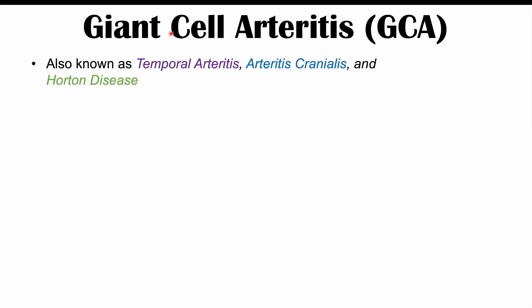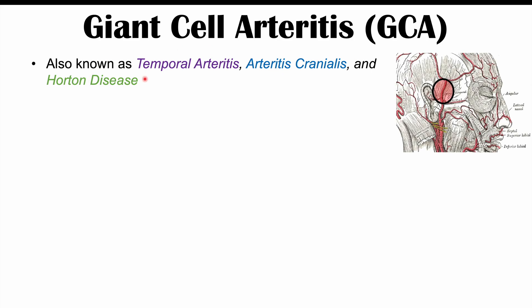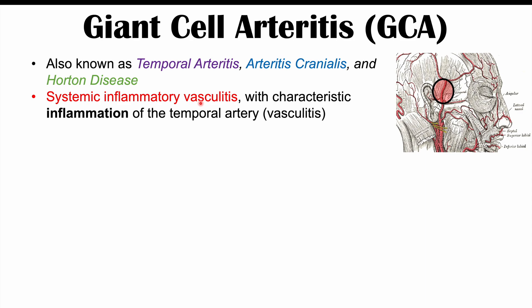Giant cell arteritis is also known as temporal arteritis, arteritis cranialis, and Horton disease. It is a systemic inflammatory vasculitis — vasculitis meaning inflammation of a blood vessel. It is often systemic, meaning many blood vessels can be involved, but there is a particular characteristic proclivity to cause inflammation of the temporal artery, which is why we see the name temporal arteritis.